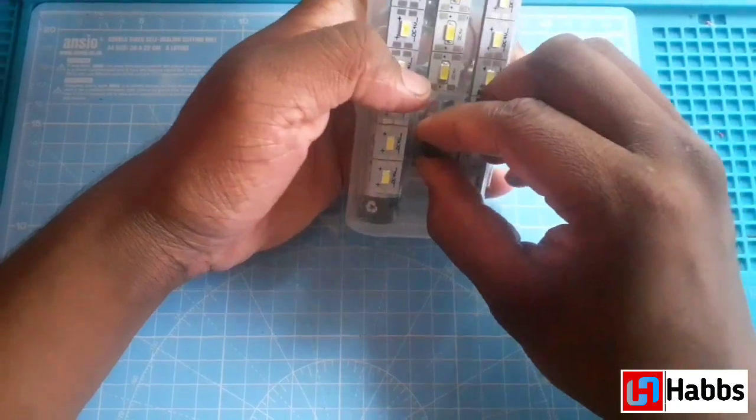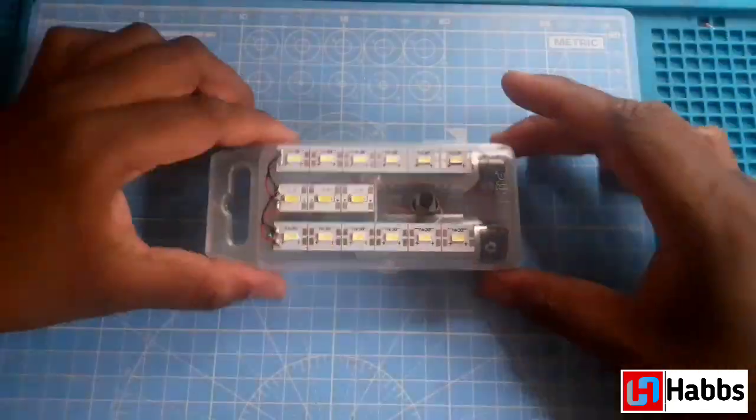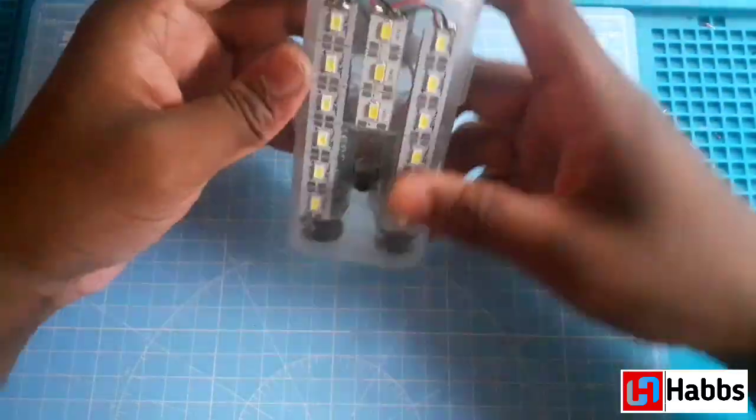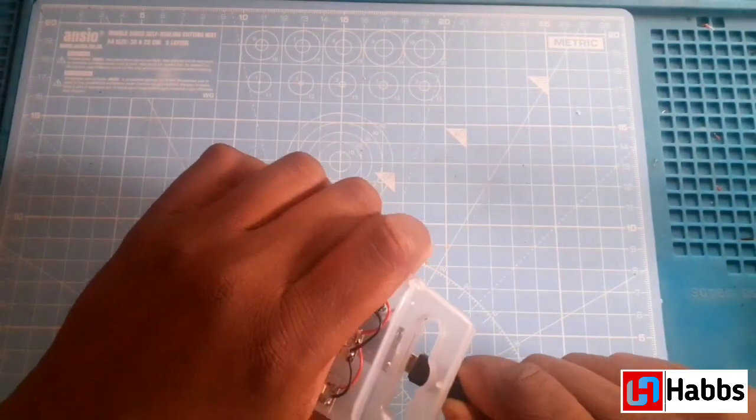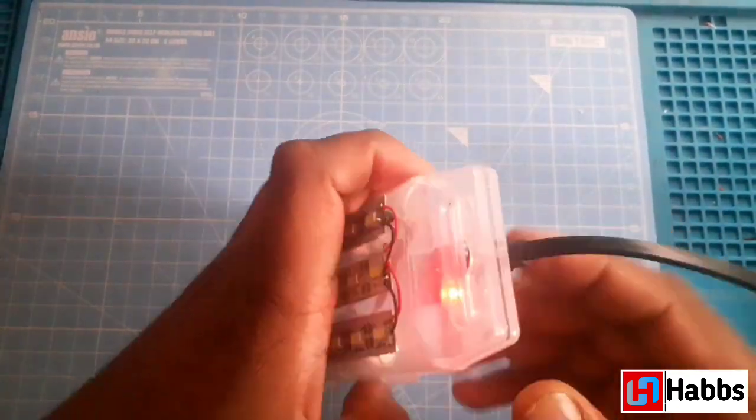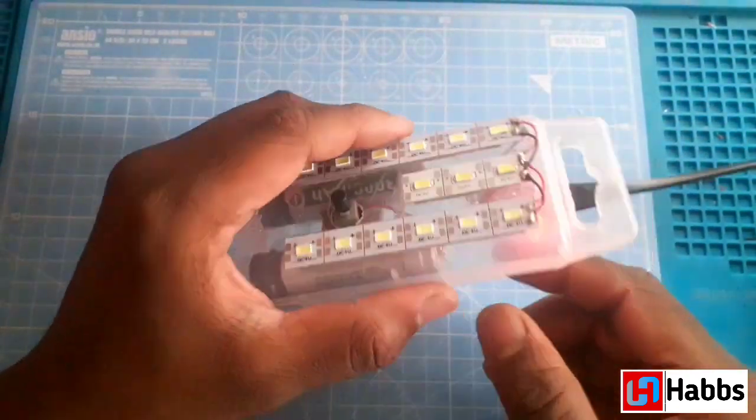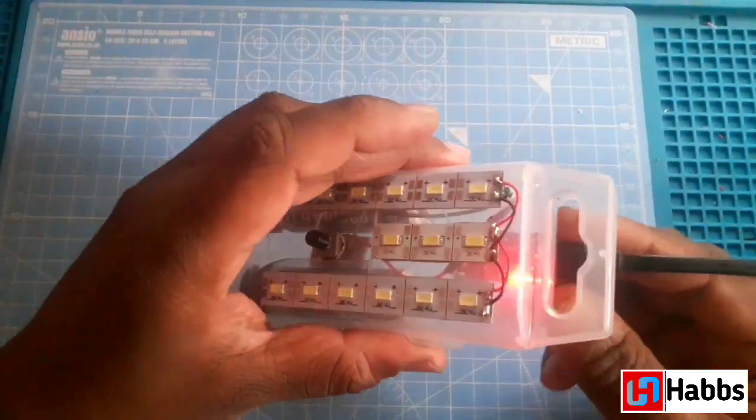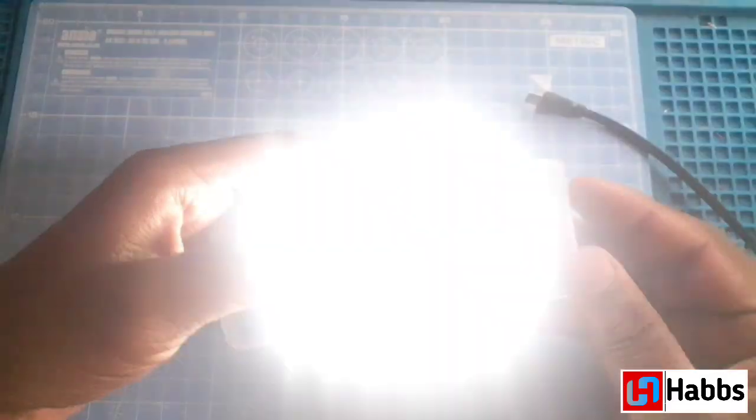Using a USB cable we will charge our LED lamp. So right now you can see that the red LED is lit. So that our LED lamp is charging perfectly.